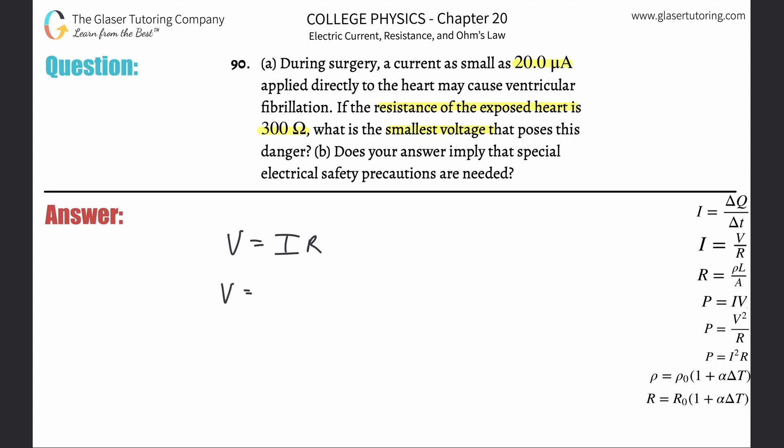So the voltage here, the smallest voltage that will cause a danger will be equal to that smallest current of 20 microamps. So it's just going to be simply 20 times 10 to the minus six. That would represent amps now because that's the unit we need. Remember amps is the standard unit. And then multiplied by 300 ohms, that's standard. The unit is ohms, not kilo ohms or anything like that.